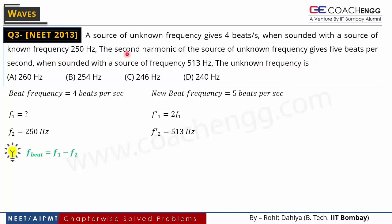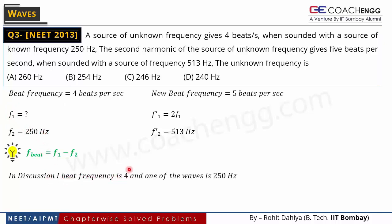We need to find the unknown frequency f1. The beat frequency formula is: beat frequency = |f1 − f2|, i.e., the difference of the two frequencies gives the beat frequency. We know the difference between these two frequencies was 4. We don't know whether f1 was greater or less than 250 Hz. So from case 1 with beat frequency 4 and one wave at 250 Hz, the unknown frequency is either 246 Hz or 254 Hz.